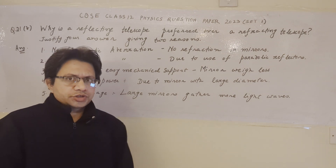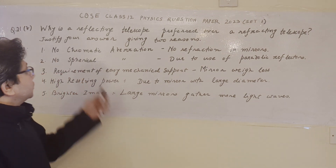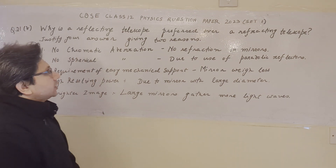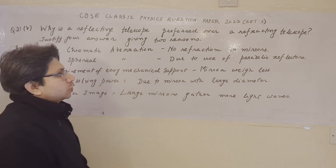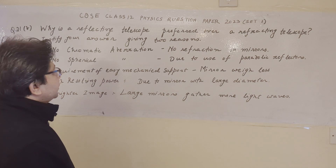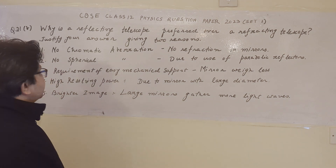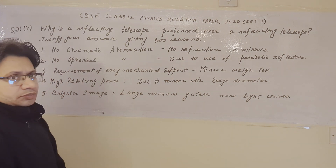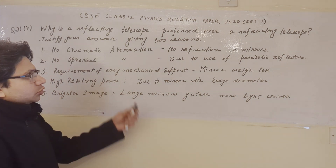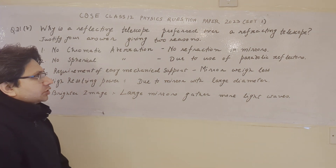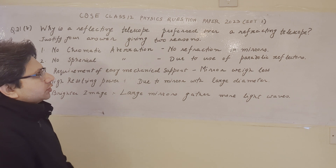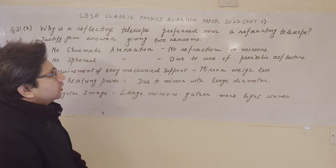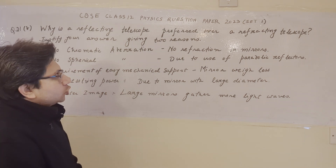Hello students. The question is: why is a reflecting telescope preferred over a refracting telescope? Justify your answer giving two reasons. This is a problem about the optical instrument known as the telescope.